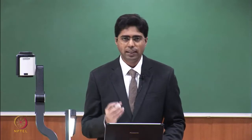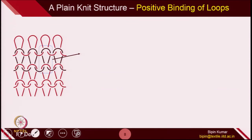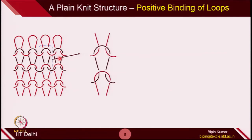Now let's try to understand what is actually happening inside a knit structure. Looking at a basic weft knit structure — the most simple one — if you try to enlarge it, the central loop is surrounded by four loops: one on each side, one on the bottom, and one on the top. If I try to pull this loop from outside or snatch it from the fabric, the top and bottom loops will try to prevent this loop from going anywhere, because a loop is positively bound by the top loop and bottom loops.